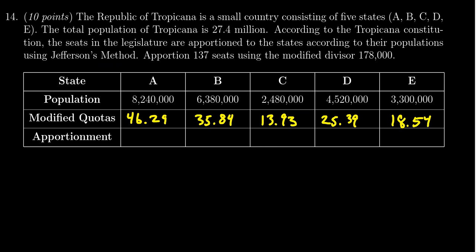So you round each of these quotas down: 46, 35, 13, 25, and 18. You can check that 46 plus 35 plus 13 plus 25 plus 18 is equal to 137. This gives you the correct apportionment of the seats using Jefferson's method.